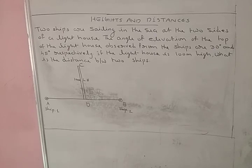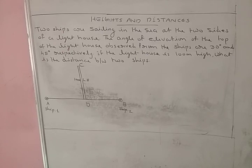Two ships are sailing in the sea at the two sides of a lighthouse. The angle of elevation of the top of the lighthouse observed from the ships are 30 degrees and 45 degrees respectively. If the lighthouse is 100 meters high, what is the distance between the two ships?